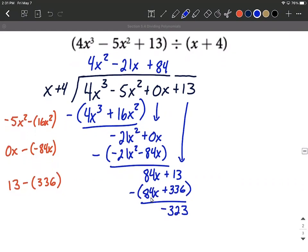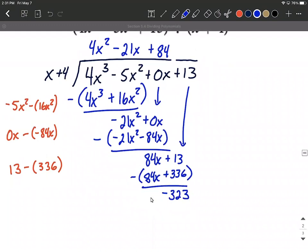Okay, from here we could format our overall solution by simply writing the quotient: 4x² - 21x + 84 plus the remainder over the divisor. That would be a pretty good format for our solution. Instead of writing plus and -323 over x + 4, I moved this negative out in front, simply made it a subtraction.